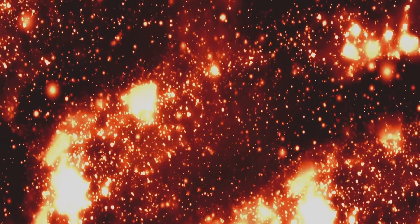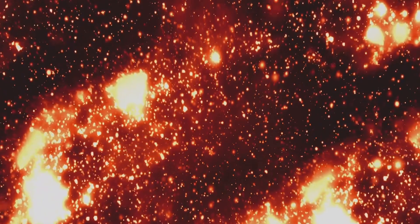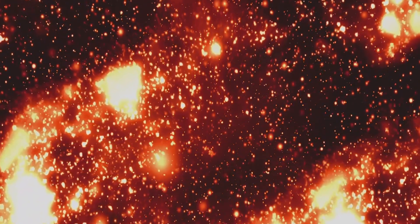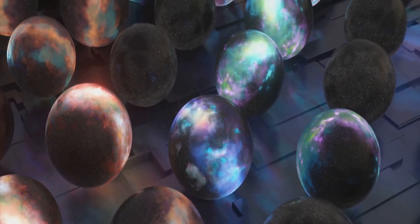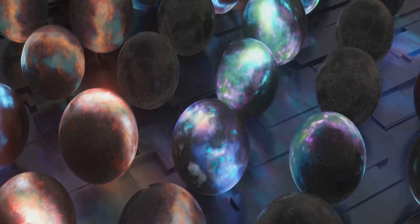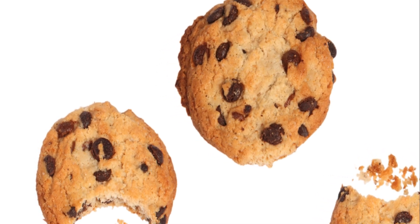In an infinite universe with a finite number of building blocks like atoms, there's a chance you could encounter an exact copy of yourself somewhere out there. Think of it like making an infinite number of cookies. Eventually, some will look identical. However, the chance of this happening is incredibly small, like finding another exact Earth in a universe unimaginably larger than what we can see.